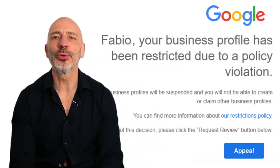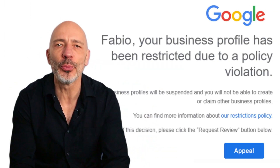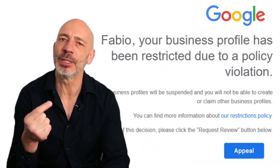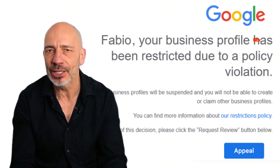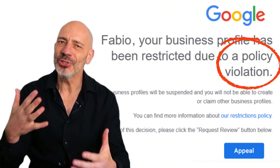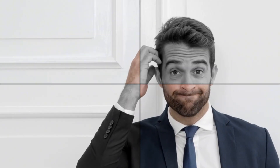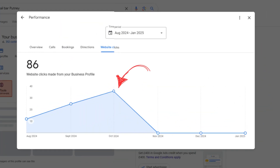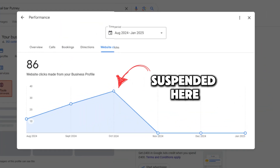Have you received one of these from Google to tell you your business profile has been suspended for a policy violation and you're not quite sure what you need to do? If you're like most business owners, you're probably left scratching your head wondering what you did wrong — on top of that, there's the stress of knowing your listing isn't showing up on Google anymore, meaning you're missing out on a ton of clients.